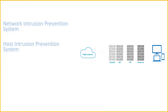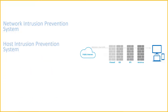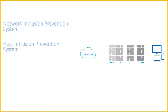Next is the host intrusion prevention system (HIPS). In contrast to a network intrusion prevention system, a host intrusion prevention system is installed on an endpoint such as a PC and looks at inbound and outbound traffic from that machine only.